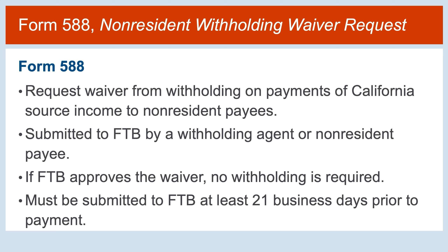Form 588 is a request for a waiver from withholding on payments of California source income to non-resident payees. The form may be submitted by the withholding agent or non-resident payee. Form 588 must be submitted to FTB at least 21 business days prior to the payment. Requests can be submitted online or by mail. If FTB approves the waiver, we will notify the requester and no withholding is required. The waiver is only valid for the remaining calendar year and the following calendar year.